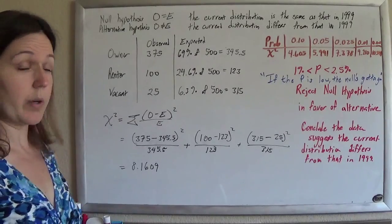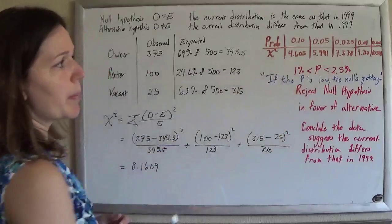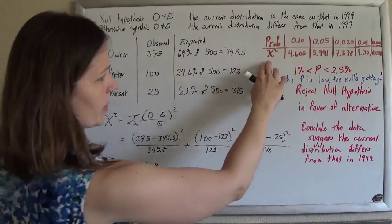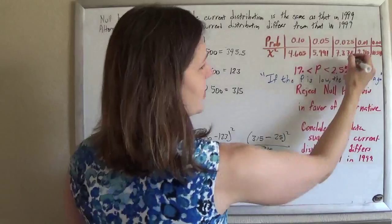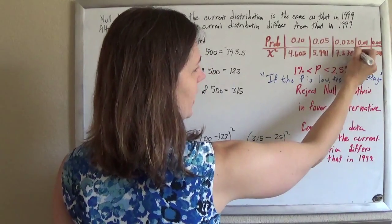And you're like, okay, what do I do with that? And they give you this little probability table. So you find your chi-squared value where it would fall. And so, 8 falls between 7 and 9, so right here.